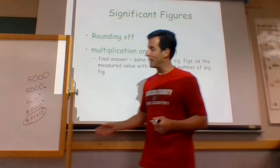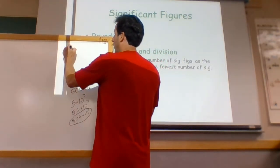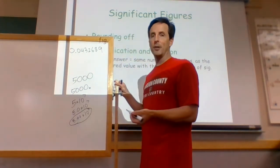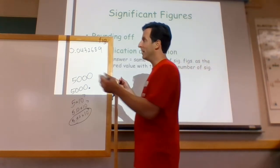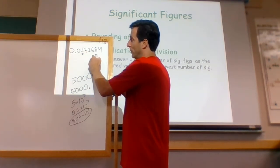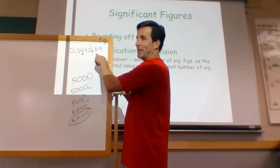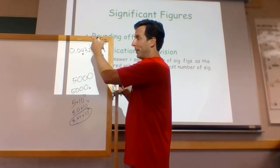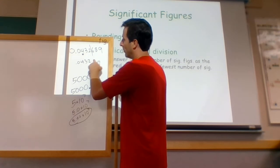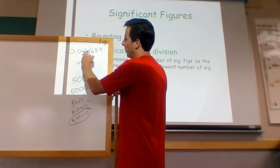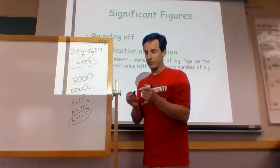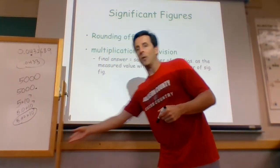Let's say your calculator gives you 0.0432689. If we decide we need 3 sig figs, I look at the number and find the first sig fig is the 4, because zeros to the left don't count. So I've got 4, 3, 2 — I round off after the 2, but the next digit is a 6, so it rounds up. I would write down 0.0433. The 6 rounds the 2 up to a 3. That's the number I write down.